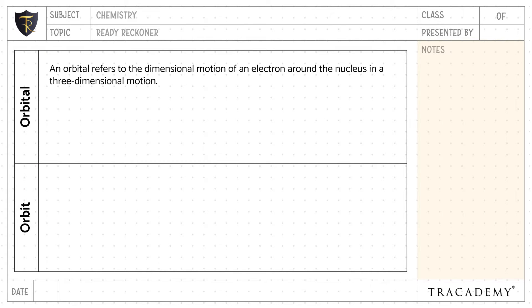An orbital refers to the dimensional motion of an electron around the nucleus in a three-dimensional motion. An orbit is the simple planar representation of an electron.